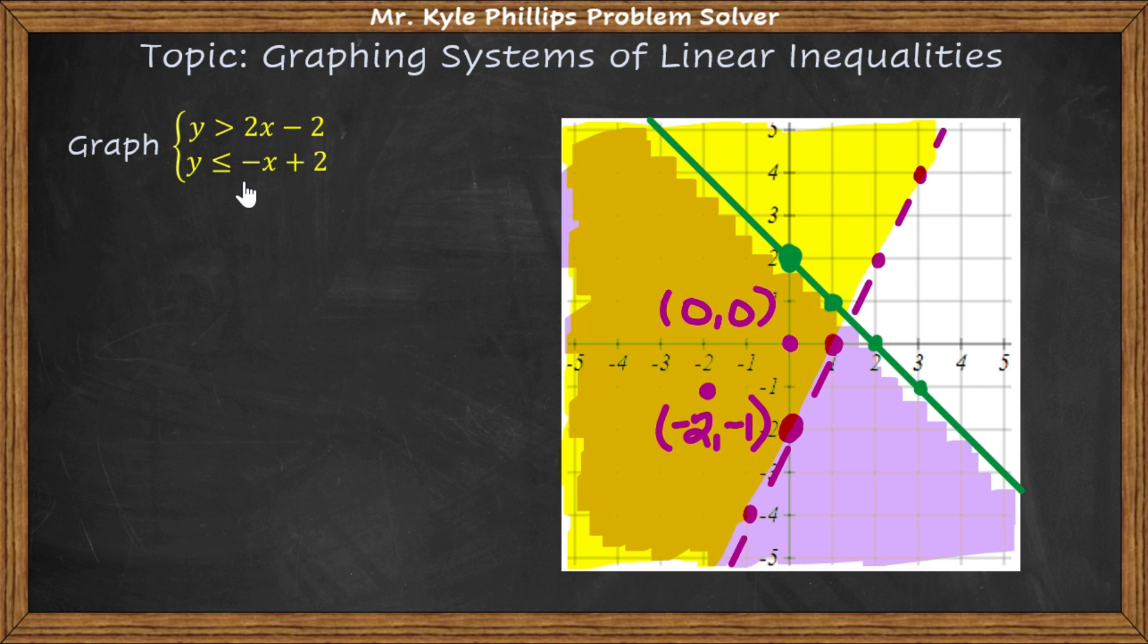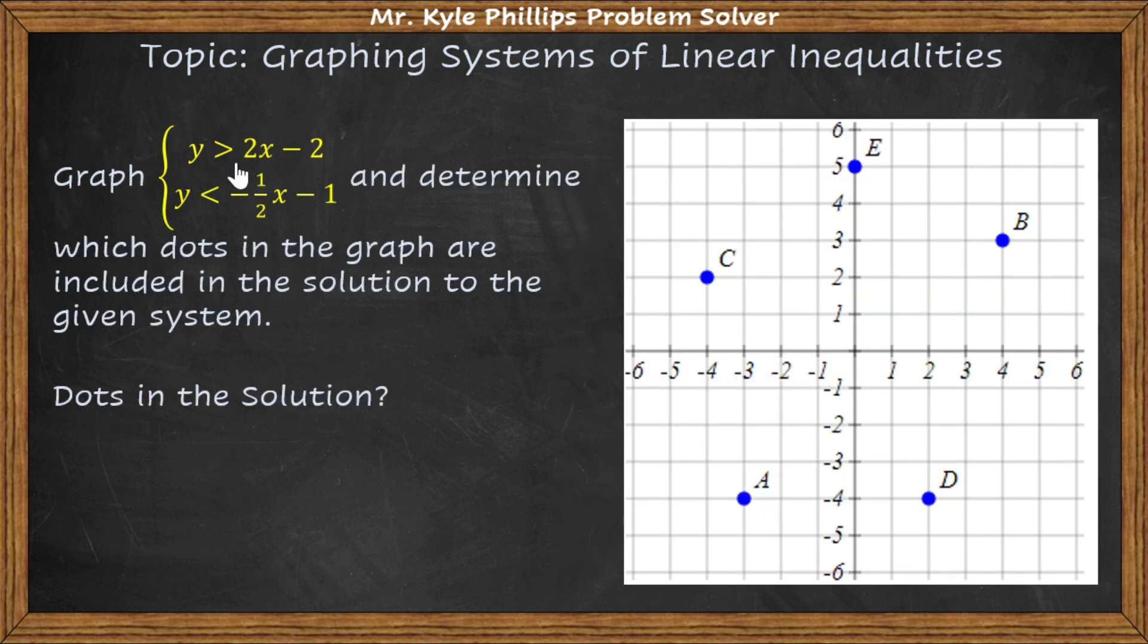All right, let's look at another example of how you might see a system of linear inequalities. Here, they want us to plot each of these graphs and then determine which dots in the graph are included in the solution to the given system. So I need to plot each of these and then see which dots are in the overlapping shaded region.